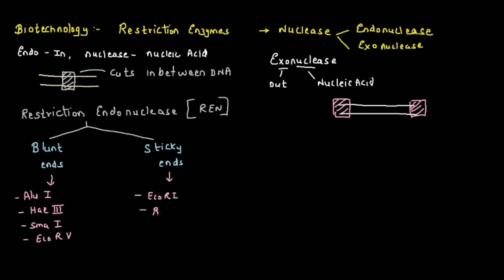The enzymes producing sticky ends are EcoR1, BalmH1, Hind3, and PST1. We need to understand how these enzymes are cutting the DNA and why these different types of names are given.